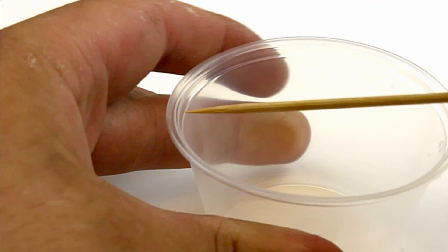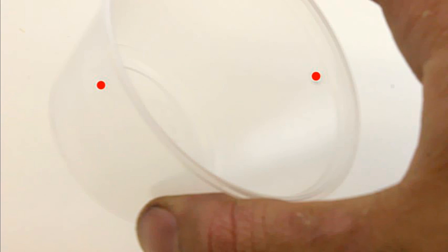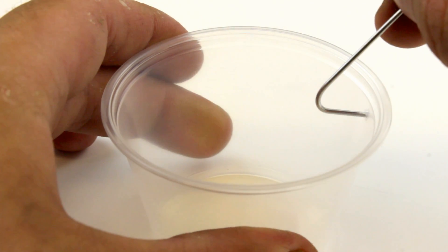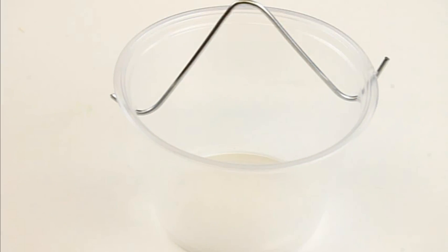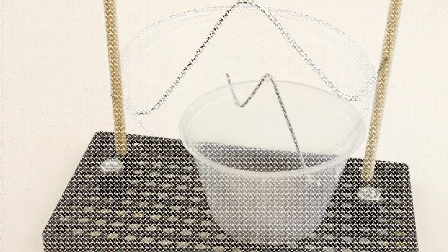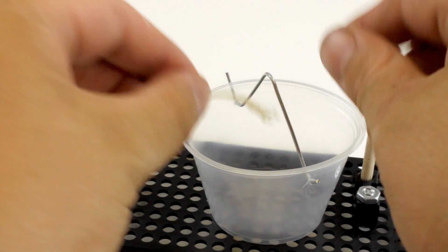Poke 2 holes into your cup. You can use the skewers with the points on them to make a hole, making sure the holes are opposite each other. Attach the wire however you feel will work best, then tie the other end of the string onto your wire.